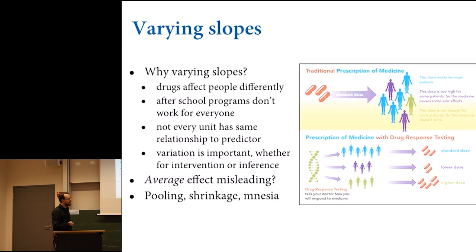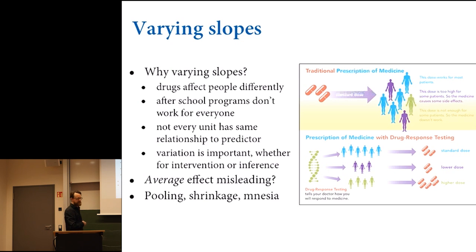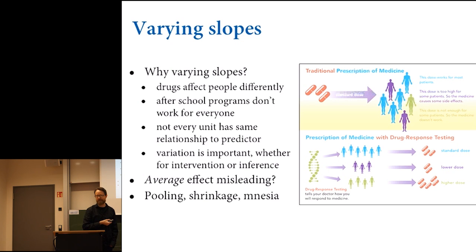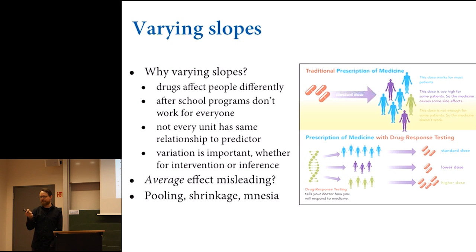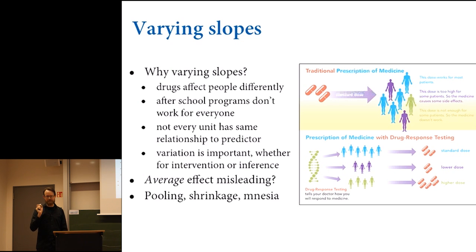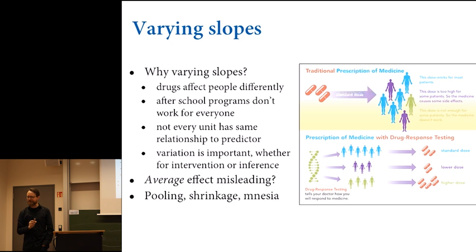In varying slopes models, the average effect of a predictor variable can be indistinguishable from zero — extremely close and precisely estimated around zero — yet you would get better predictions if you pay attention to the predictor. Why? Because for some units there's a big effect. Pooling estimators help with the overfitting-underfitting trade-off.